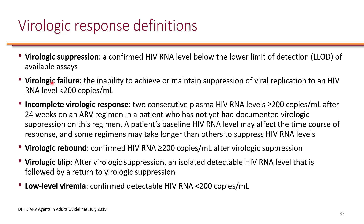Virologic failure is any time the viral load is more than 200 copies per mL. Incomplete virologic response is if the viral load is greater than 200 in two consecutive viral loads separated by 24 weeks. A single level greater than 200 doesn't necessarily mean an incomplete virologic response — you have to look at the trend to see if it's trending down or up.